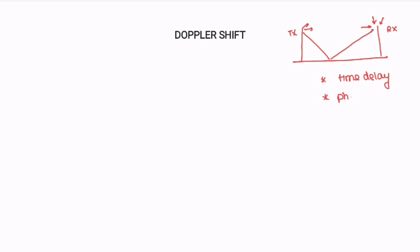There will also be some change in phase. Phase is nothing but the starting position of the amplitude. If you see one signal or another signal, you will find a change in phase due to the reflection, diffraction, and scattering mechanisms.